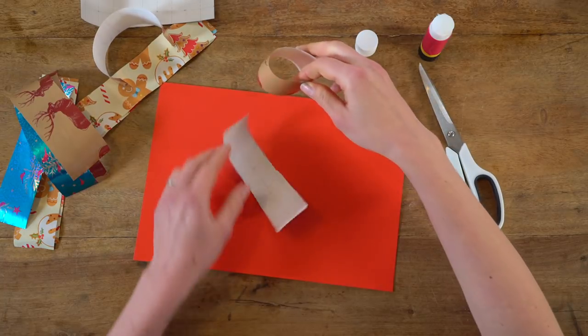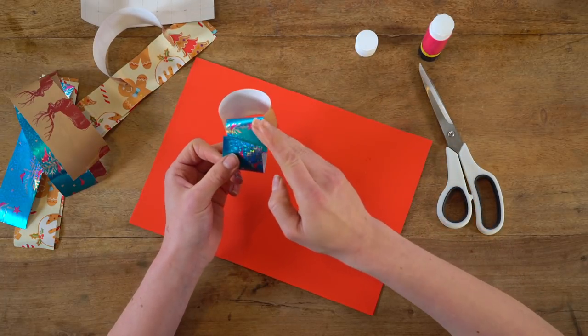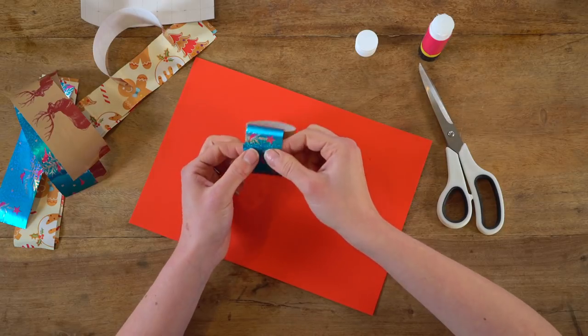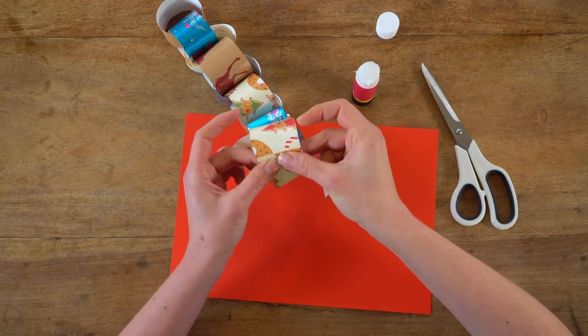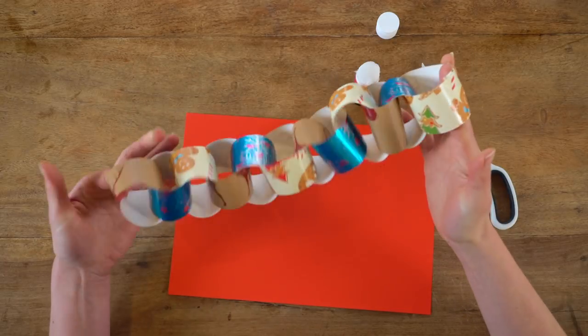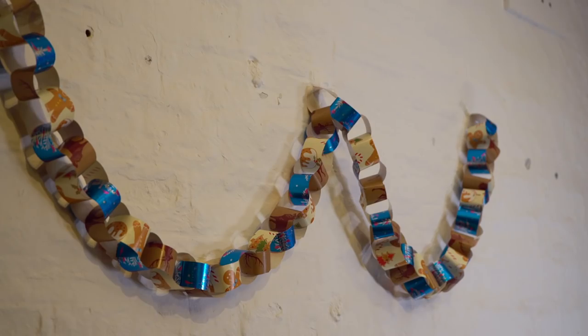Thread a different piece of wrapping paper through this first loop before gluing the ends together. Keep going until you get the length you want, or run out of wrapping paper. Find somewhere to display your paper chain.